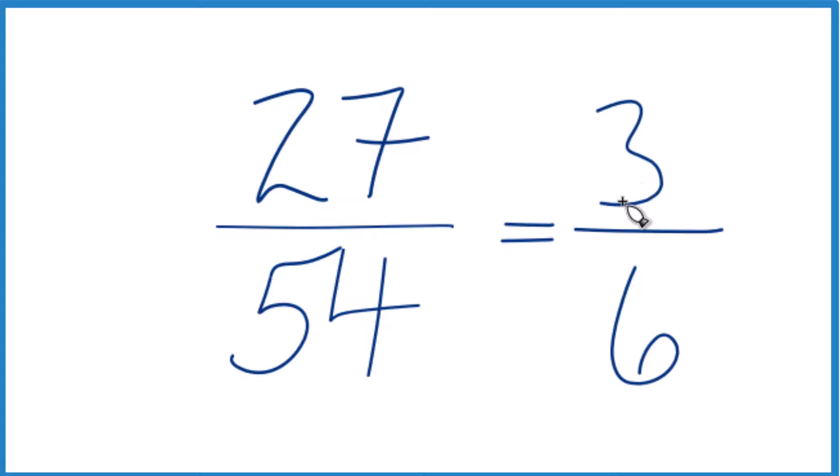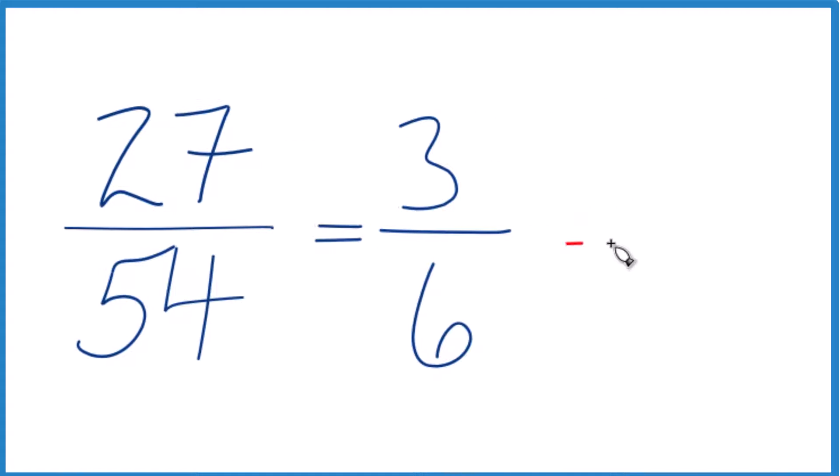And now I see that 3 over 6, that's just equal to 1 over 2. 3 goes into itself one time, 3 goes into 6 two times.